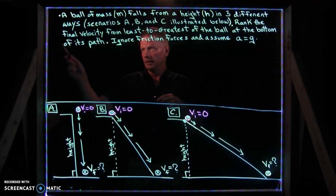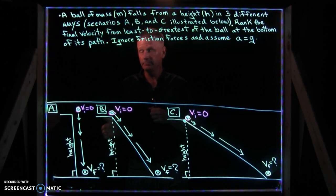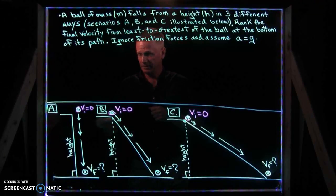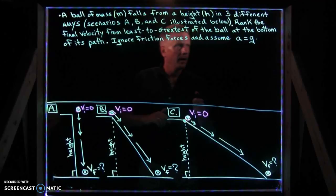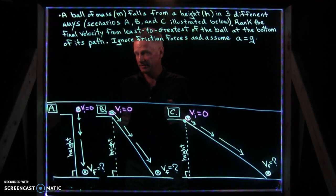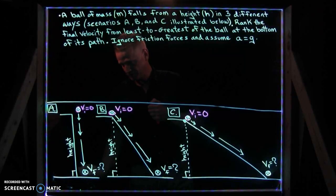First consider this scenario. Imagine a ball, mass m, any mass, falls from some height in three different scenarios as I have illustrated below, scenario A, B, and C. Your job is to consider if the ball falls vertically in scenario A, just free fall, drop, fall straight down.